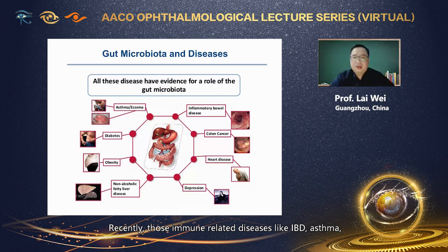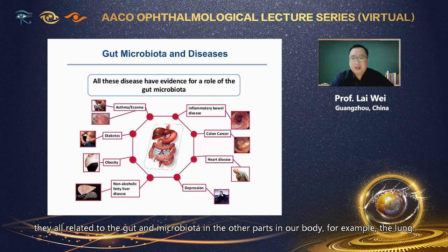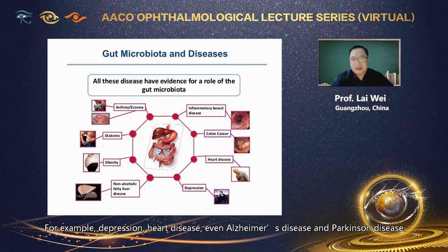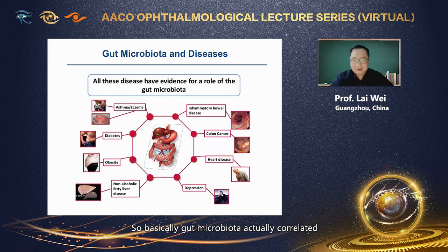Collectively, the microbiota, especially gut microbiota, has been shown to correlate with health, physiology, and pathology for many different conditions. Especially for metabolic problems like obesity and diabetes, the gut microbiota plays an important role. Recently, immune-related diseases like IBD and asthma are also related to gut microbiota, and gut microbiota has been shown to regulate disease phenotype in conditions like depression, heart disease, even Alzheimer's and Parkinson's.